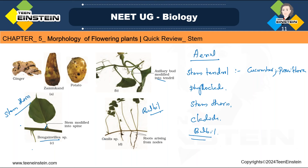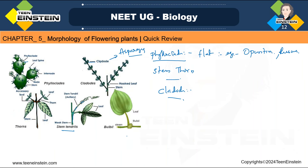Bulbils are organs for vegetative reproduction. You can see that from the stem, many are arising and they can be used for vegetative reproduction. Roots will also arise from that portion. These bulbils function as the organ of vegetative reproduction. Example: Oxalis and Dioscorea.